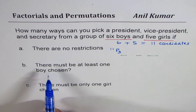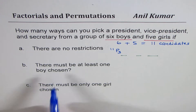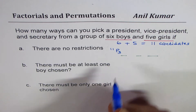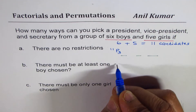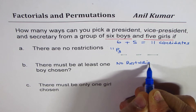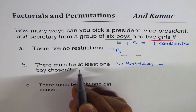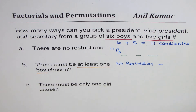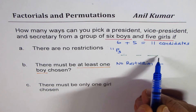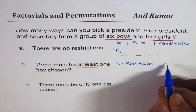The second condition is there must be at least one boy chosen. When we say 'at least one boy,' the key word is 'at least.' It could be one boy, two boys, or all three boys. The best approach is: no restrictions take away no boys.